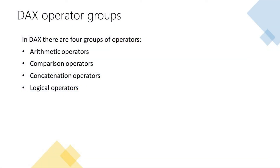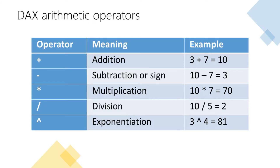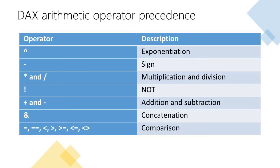We have already talked a little bit about operators and in DAX they belong to one of four groups: arithmetic operators, comparison operators, concatenation operators, and logical operators. This table shows the different types of operators in the arithmetic group along with a typical example of use. When using arithmetic operators it is important to consider the order in which they are applied. The next table shows the order of precedence for each of the different arithmetic operators, and if you need to override this order of precedence then you can do so by using parentheses.